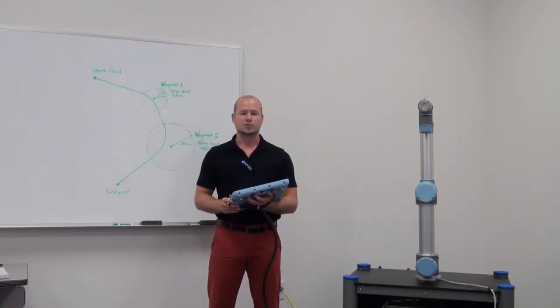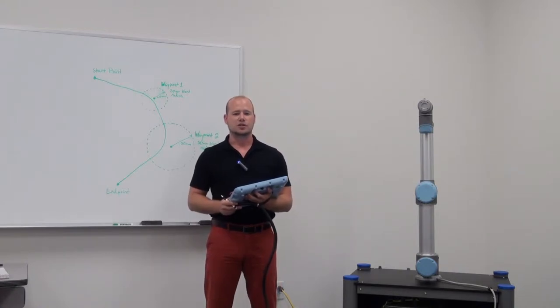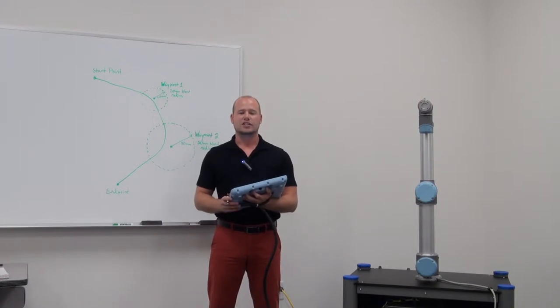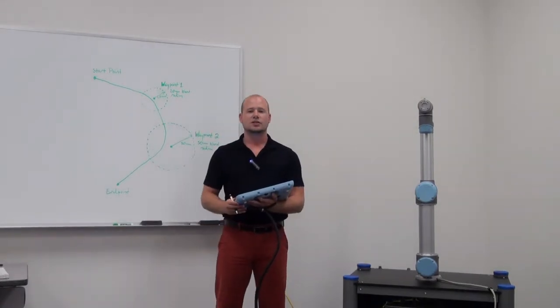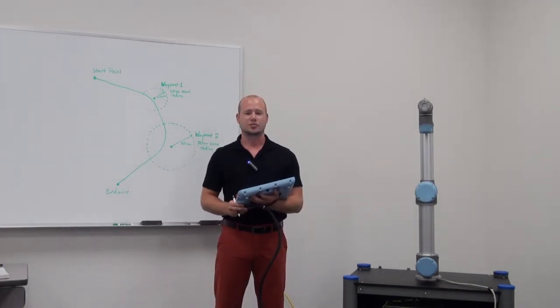The first type is a move J, and that's a joint move. It's the simplest form and it's the best way to get from point A to point B quickly. The robot will calculate the shortest overall joint move for each of the joints to get to the point all at the same time. The robot won't care about the tool center point position. It'll just be an arc and get to the waypoint that you programmed.